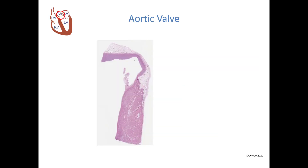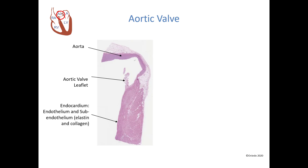Here is our aortic valve summary. This is the aorta. Here is the aortic valve leaflet — I can be sure of that because there are no chordae tendineae. Here is the endocardium, which is composed of endothelium and subendothelium. Here is the left ventricle myocardium. Here is the epicardium, which is composed of adipose and blood vessels.